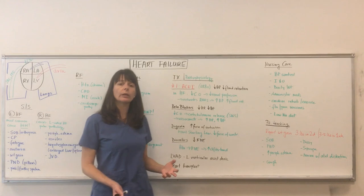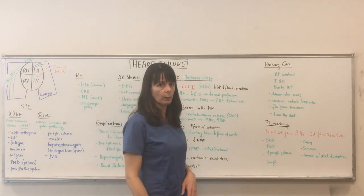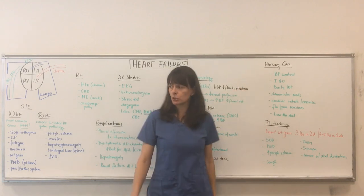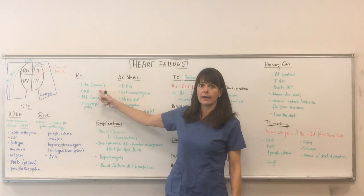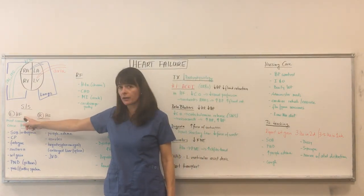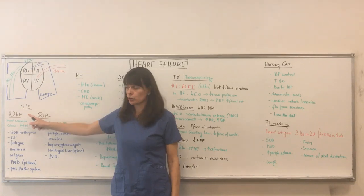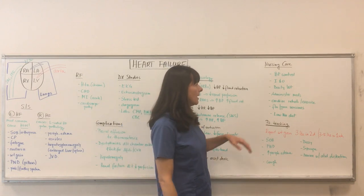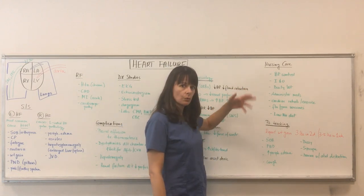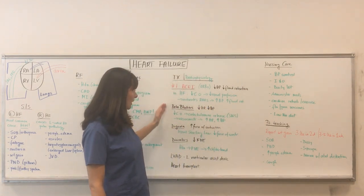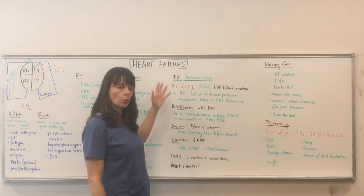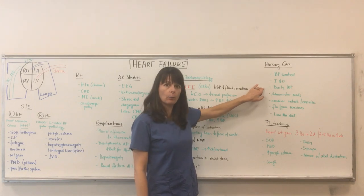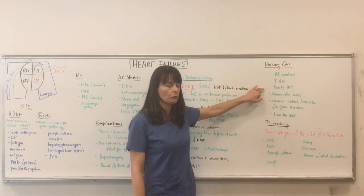Now when it comes to nursing care — what do we need to do for these patients with heart failure? Number one: control their blood pressure, because we know heart failure is caused by hypertension. That's the number one cause of left-sided heart failure, and eventually if we don't get it under control, it will lead to right-sided heart failure. When the patient is in the hospital with all this extra fluid, we're going to have to measure intake and output and their daily weight to see if they're retaining fluid.